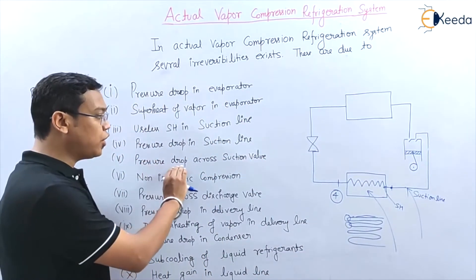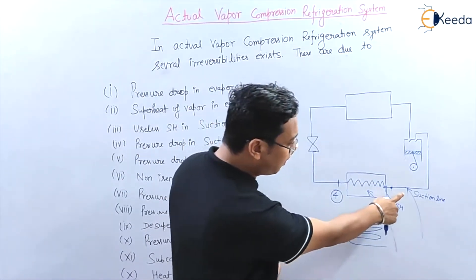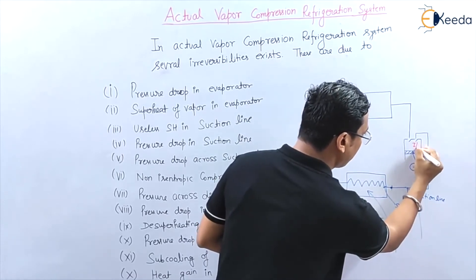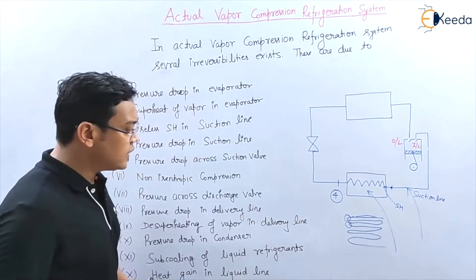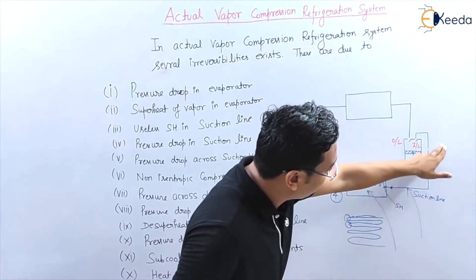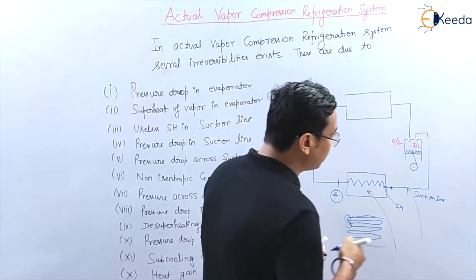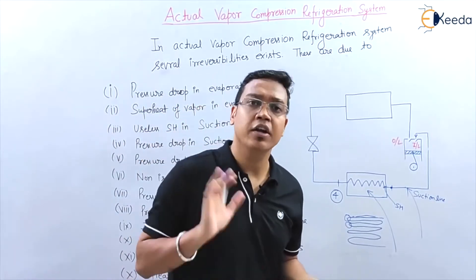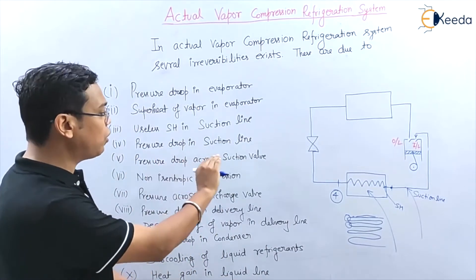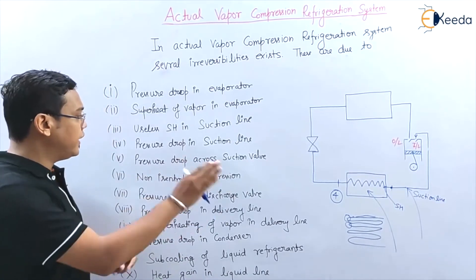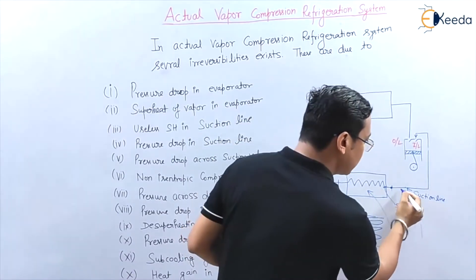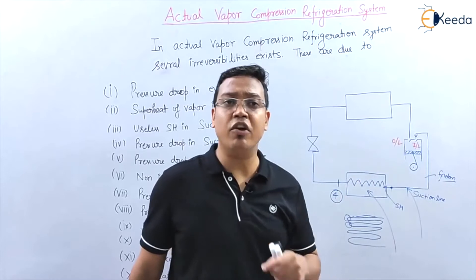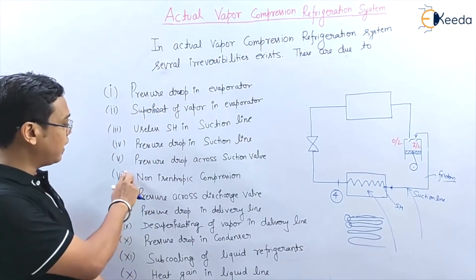The next point is pressure drop across the suction valve. The refrigerant travels from the evaporator to the compressor through the inlet valve. Some resistance occurs during the opening of this valve, which causes a pressure drop. Additionally, there is also friction in the suction line itself, which causes further pressure drop. This brings us up to point number 5.